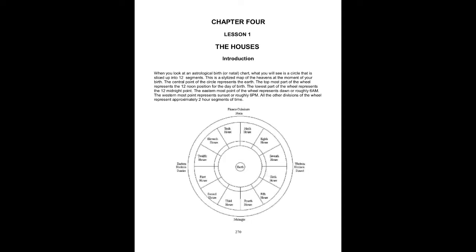Chapter 4, Lesson 1: The Houses — Introduction. When you look at an astrological birth or natal chart, what you will see is a circle that is sliced up into 12 segments. This is a stylized map of the heavens at the moment of your birth.